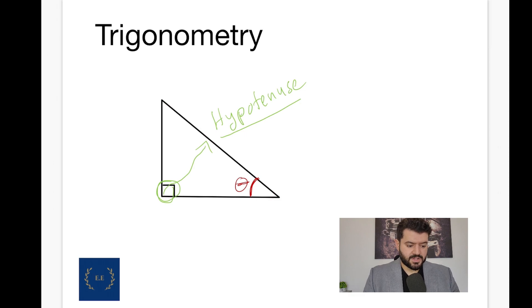Now, the other side which is in front of theta. So, we have the angle over here which is theta. And the side in front of the angle theta, we call it the opposite. Opposite to the angle, so it's the opposite side. And the final side which we are left with, we call it the adjacent.